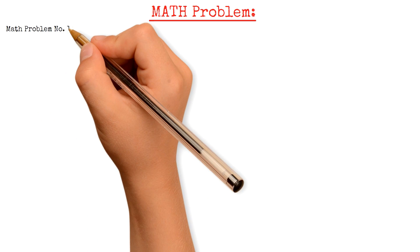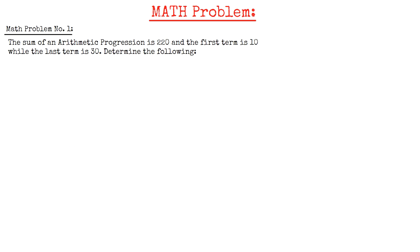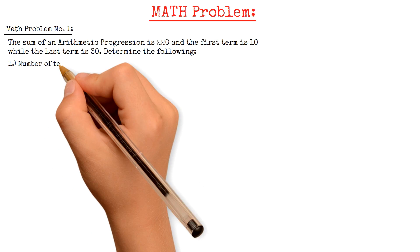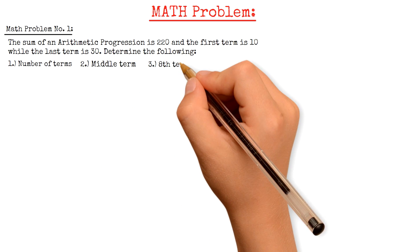To begin with, we have our first math problem: the sum of an arithmetic progression is 220, the first term is 10, and the last term is 30. Determine the following: first, the number of terms; second, the middle term; and third, the eighth term.